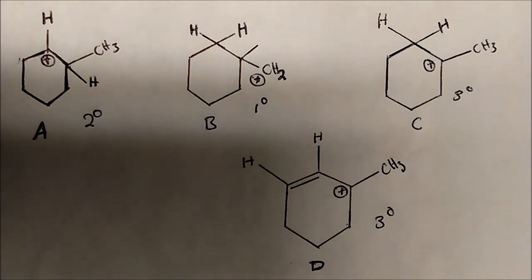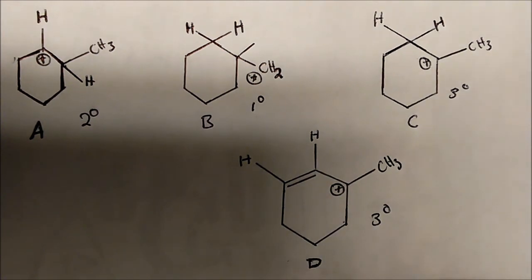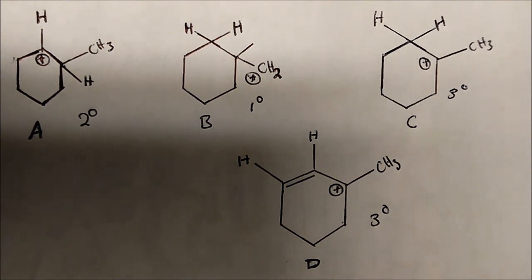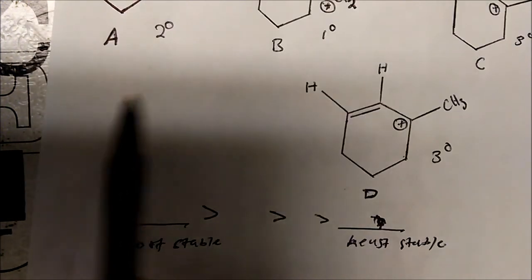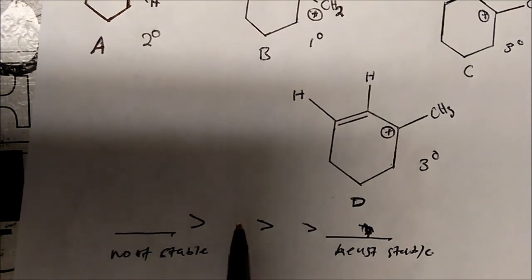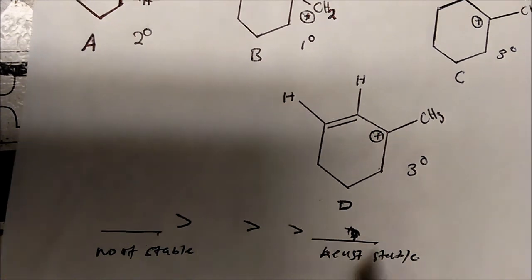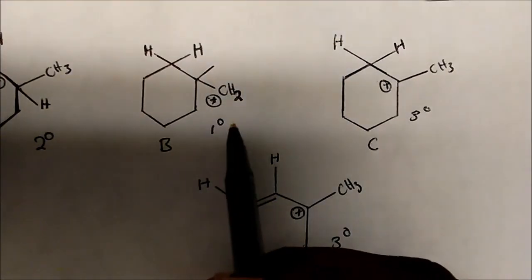So out of these four molecules — A, B, C, D — which will be the most stable and which will be the least stable? We have a scale where the least stable is on one end and the most stable is on the other. Which one is the least stable? We always say a primary is the least stable, so B is actually the least stable.